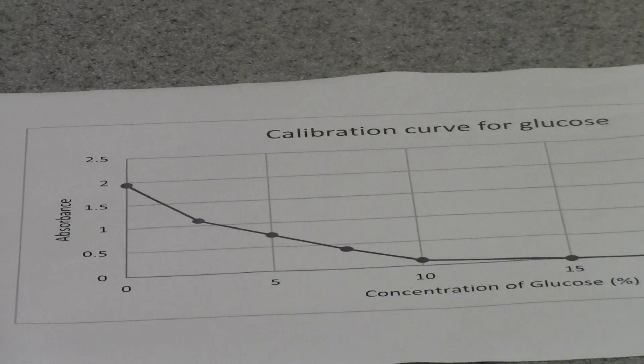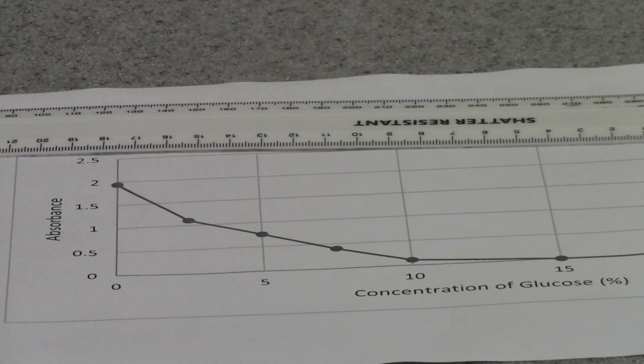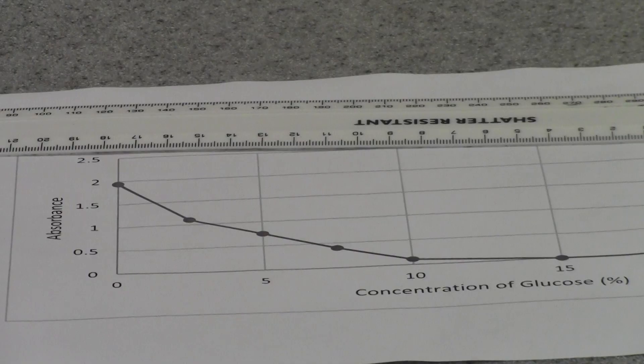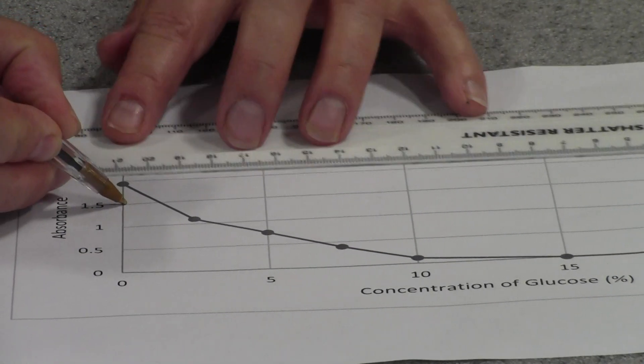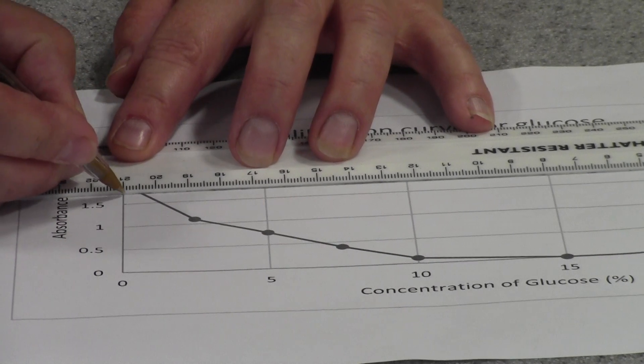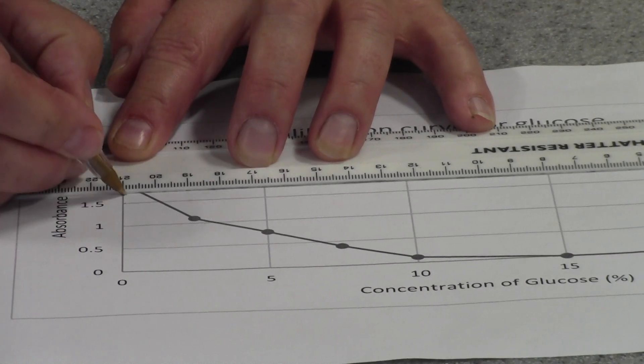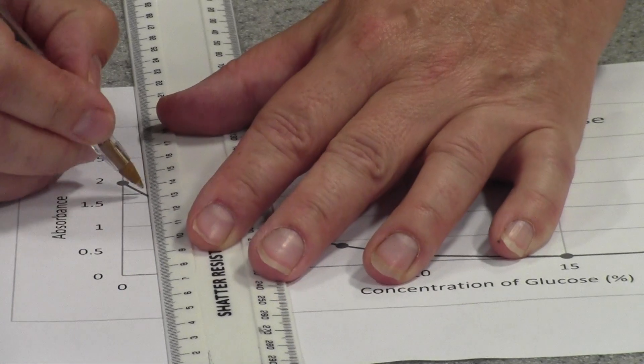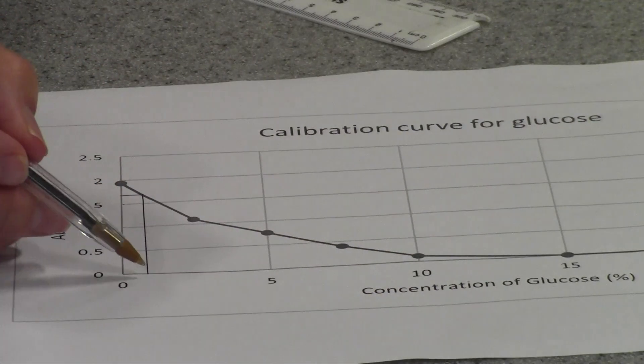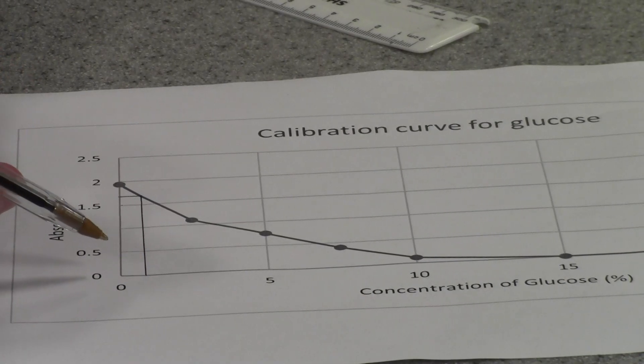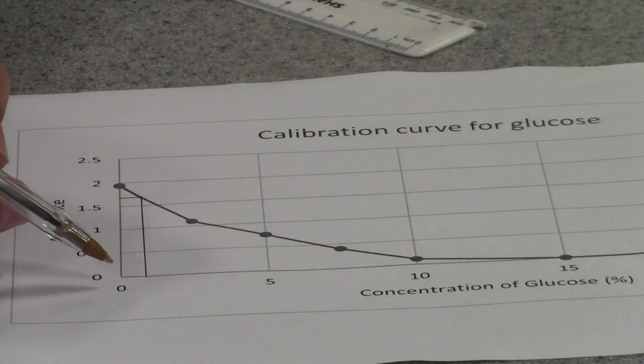So all I need to do now is take my ruler and a pen and if I go in there so we've got 1.5 there so there would be an absorbance of 1.75. So if I draw a line across there and down to the x-axis I can actually read off now the concentration of glucose in the sports drink.